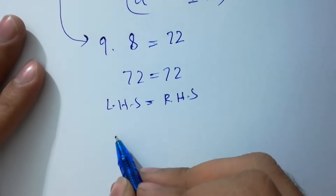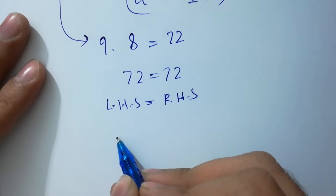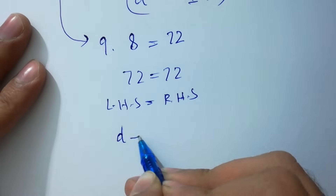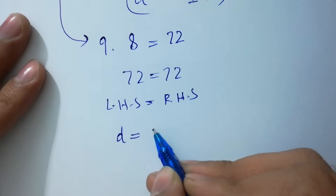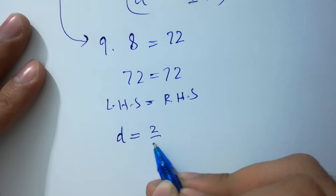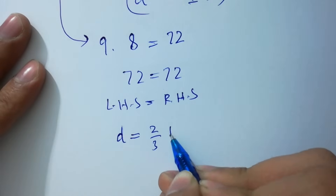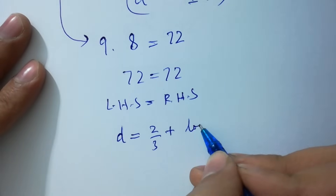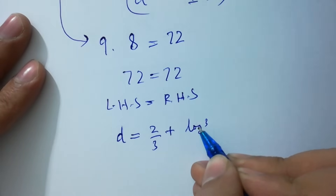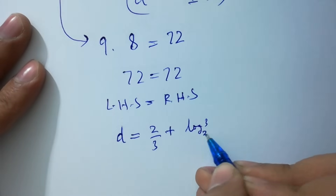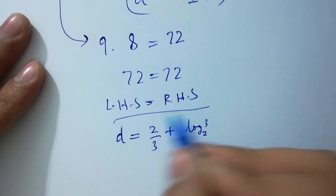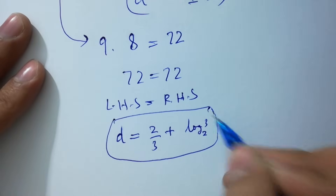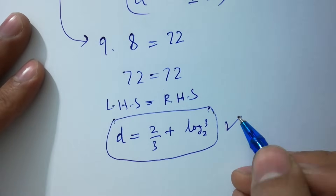This confirms that the value of D, which equals 2/3 plus log 2 to the base 3, is our final and correct answer.